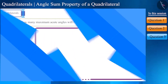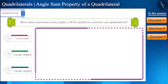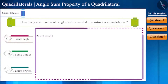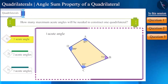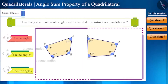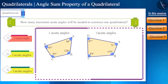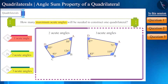Let's see another interesting question: how many maximum acute angles will be needed to construct one quadrilateral? We have to check whether it is possible to construct a quadrilateral in given situations. Taking the first option with only one acute angle, construction of a quadrilateral is possible. Similarly for two and three acute angles, construction is still possible. According to the question we have to find the maximum number, so the correct option is three.